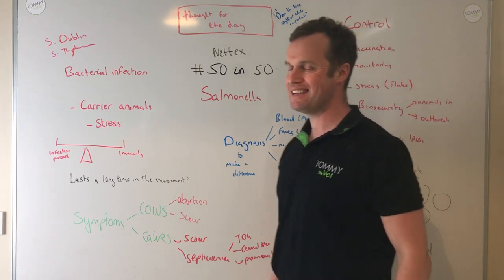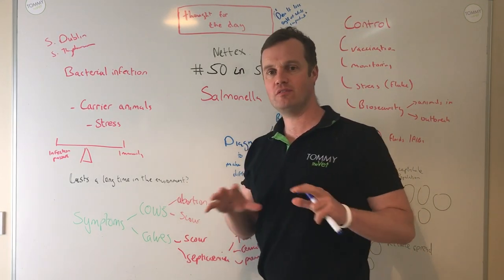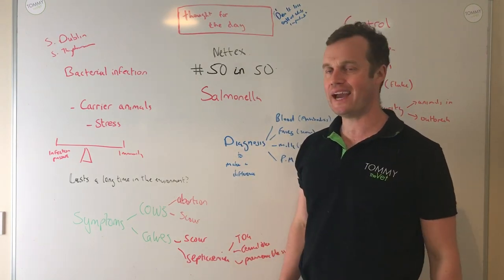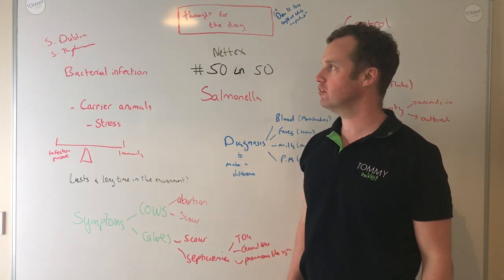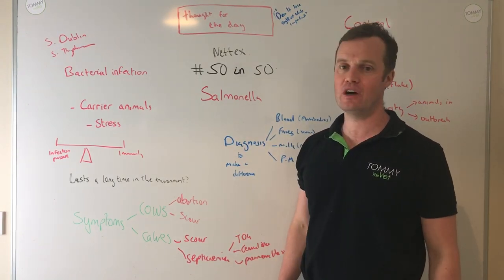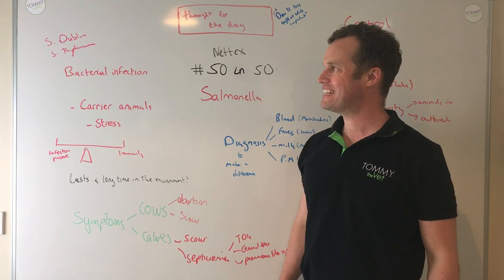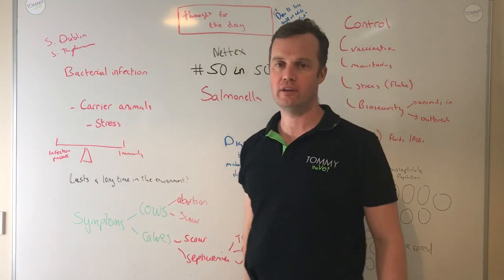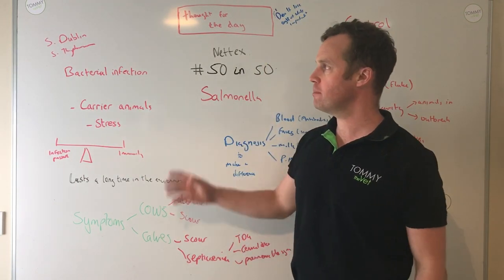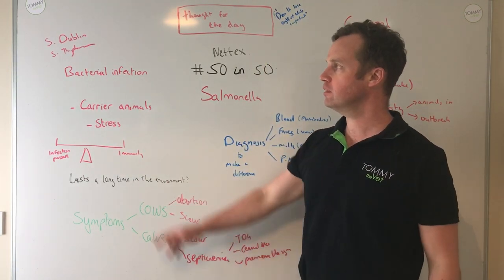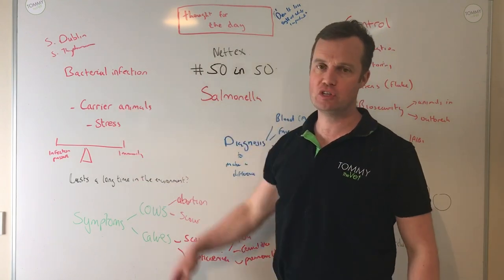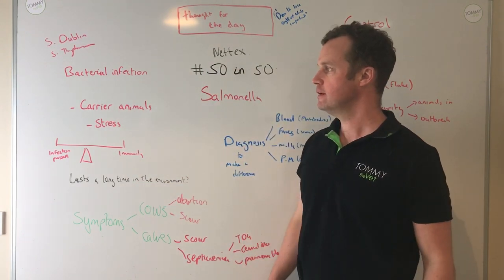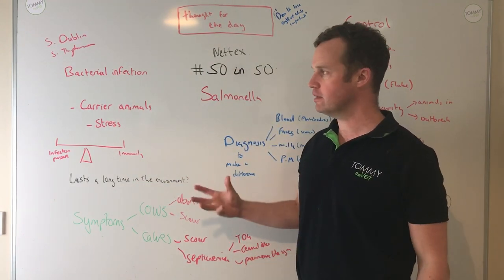Salmonella has thousands of subspecies, and the ones we see in cattle commonly are Salmonella Dublin and Salmonella Typhimurium — typically more Dublin than Typhimurium. Just remember, particularly Typhimurium can affect humans, so there's a zoonotic potential there. It is a bacterial infection.